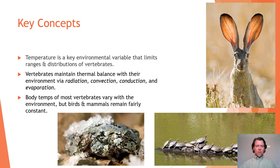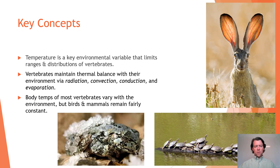Vertebrates maintain their thermal balance with their environment via radiation, convection, conduction, and evaporation. You can see some of those various factors on the figures around the screen, such as thermal windows, basking, and the frozen frog down there, which we're going to get to in just a minute. Body temperatures of most vertebrates vary with the environment. However, birds and mammals remain fairly constant.